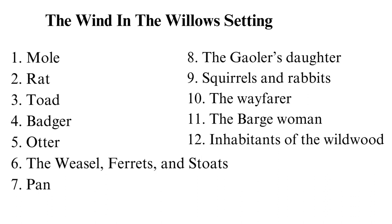Badger is a wise resident of the area and a rich friend of Toad's late father. He lives underground, is a good fighter, and is often strict with Toad. Otter is a friend to the other characters. While he is not as wealthy as the others, he is confident and supportive. Otter has a young son, Portly, and always knows what is going on behind the scenes. He also protects smaller animals like rats and moles.